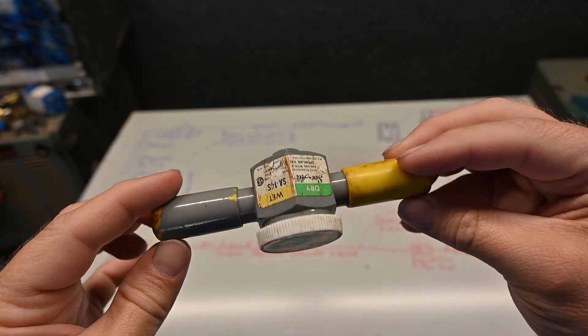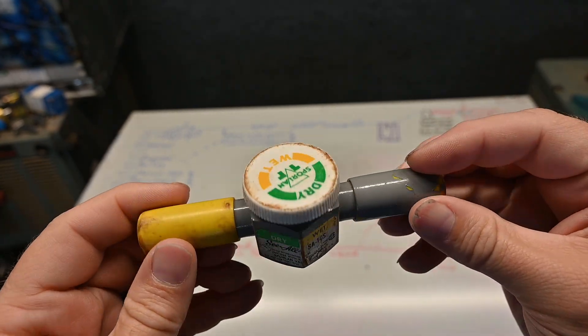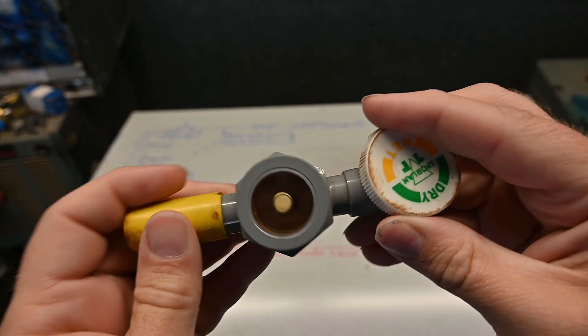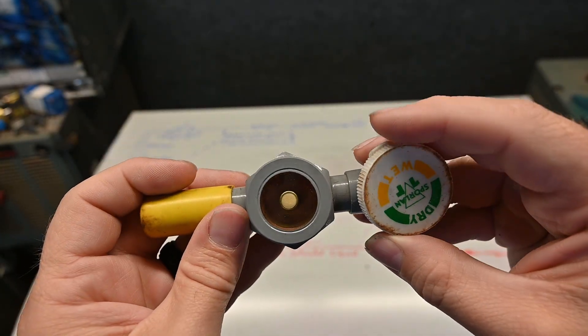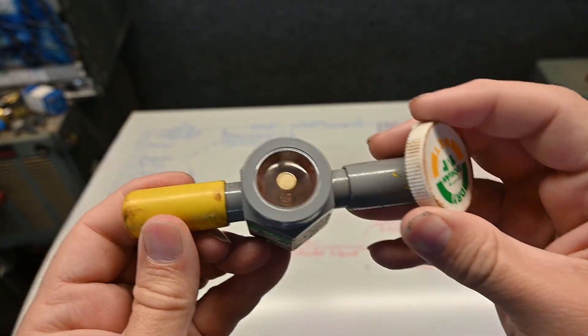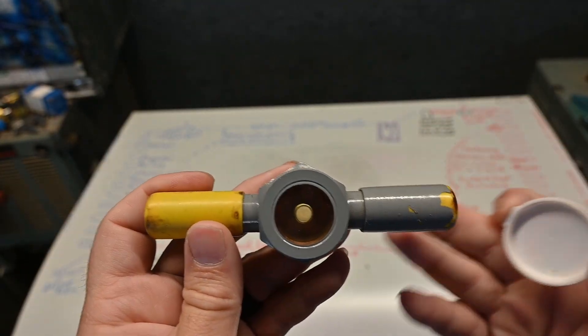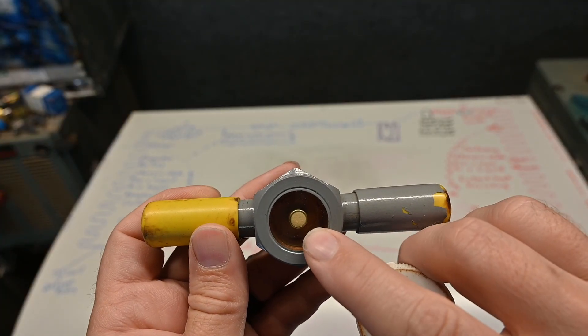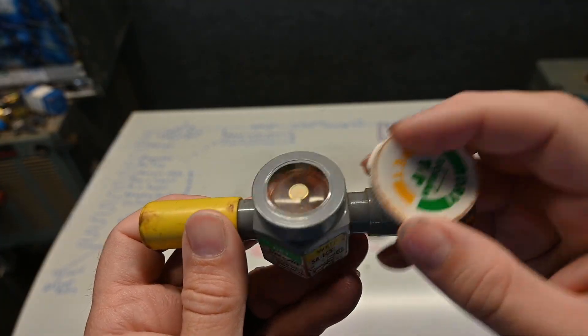So here let's take a look at our sight glass, a pretty simple little thing. If we pop this cover off, we can see the actual glass itself and we can see the refrigerant flowing through there. Right now there's no refrigerant flowing through there obviously, but here in the center we see this little yellow dot.